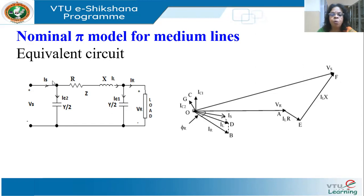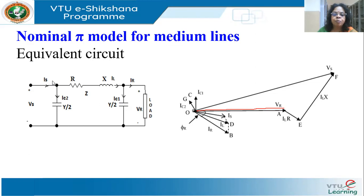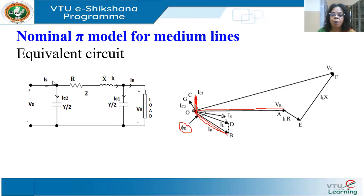Let's start with the receiving end voltage — draw Vr. The first half of the capacitance, Y/2 at the receiving end, has voltage Vr across it. Let us call this current IC1. IC1 will lead Vr by 90 degrees because in a capacitance the current leads the voltage by 90 degrees. Next, I draw the receiving end current IR. The loads are normally lagging, so let us draw IR lagging Vr by some angle phi R.